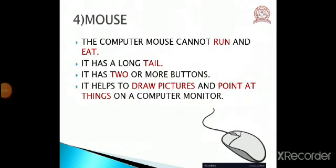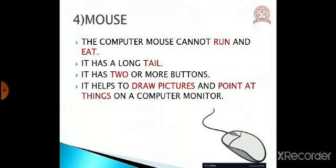The fourth part of computer is mouse. You all must have seen a mouse at your house, but the computer mouse is different. The computer mouse cannot run and eat, but it has a long tail like the mouse you see at home. The computer mouse has two or more buttons. It helps us to draw pictures and point at things on a computer monitor.